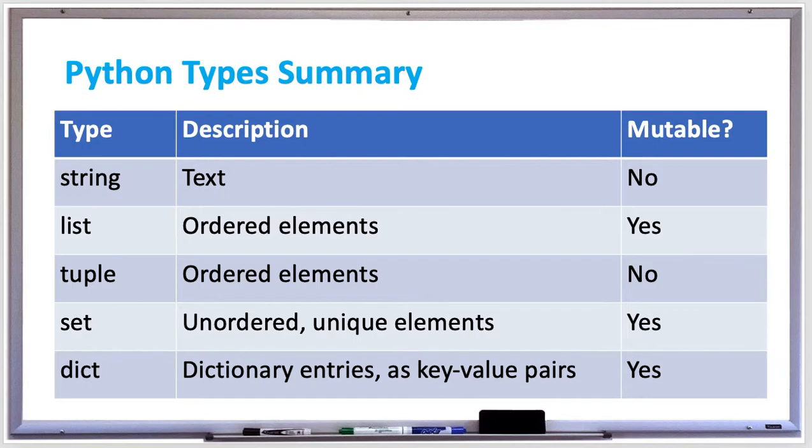A set is unordered unique elements and that is mutable. So if you had a list of items where you didn't want duplicates, you probably want to use a set instead of a list.